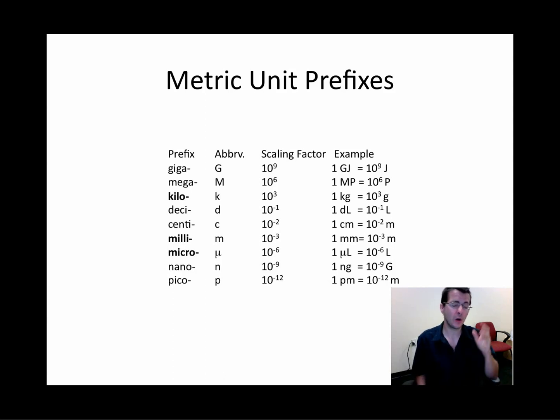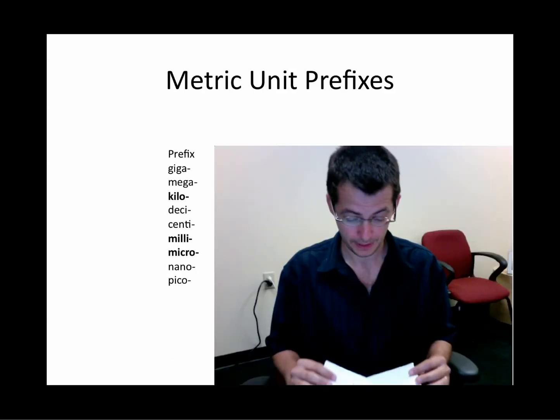Most common mistake I see is someone goes, oh, a gigajoule, that's 10 to the ninth. And so one person will write one gigajoule and thus write 10 to the ninth. And it won't relate to anything. It'll just be a number without a unit associated with it. And what happens then is the units get lost and the problems have a tendency to go nowhere.